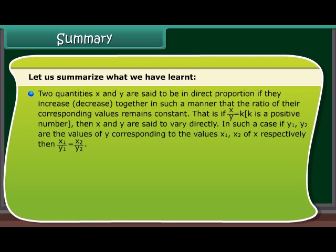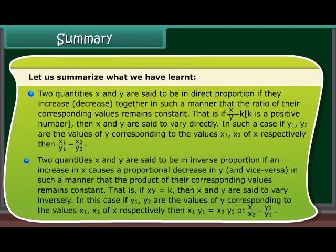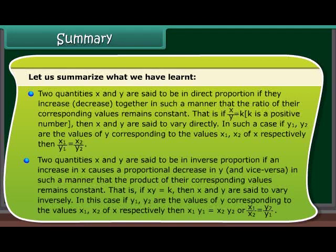In such a case, if y1 and y2 are the values of y corresponding to the values x1 and x2 of x respectively, then x1/y1 = x2/y2. Two quantities x and y are said to be in inverse proportion if an increase in x causes a proportional decrease in y, and vice versa, such that the product of their corresponding values remains constant — that is, xy = k. Then x and y are said to vary inversely, and x1y1 = x2y2, or x1/x2 = y2/y1.